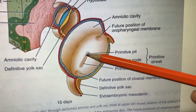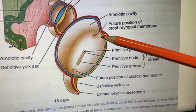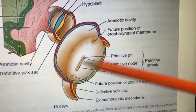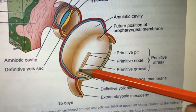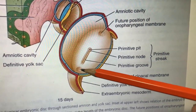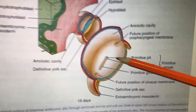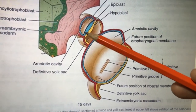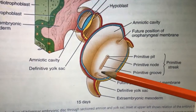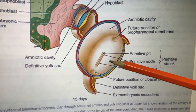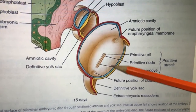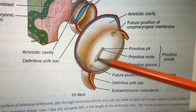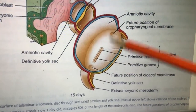Towards the cranial end is the primitive node. There is a flattened area that is the future oropharyngeal membrane — the future oral cavity. The caudal region also has a somewhat flattened region with no three-layer formation. This shows the formation of three layers. Initially we were talking about only two layers — that is called the bilaminar germ disc. Here after, we are going to see how it becomes trilaminar — a three-layered germ disc.